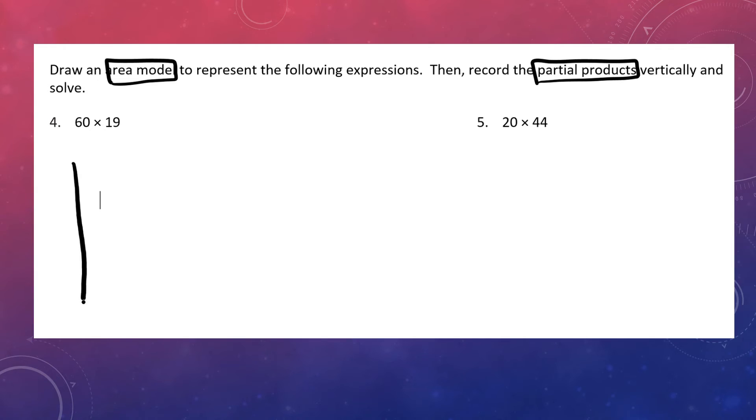So I am going to draw my rectangle and split it into two. 60 only has one value, so that is going to go on the side where I didn't split it into two. But 19 does have two values, so I'll put the ones in the first box on top of the first box and the tens on top of the second box. 10 plus 9 equals 19.